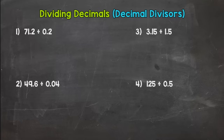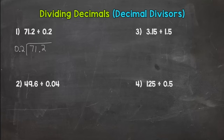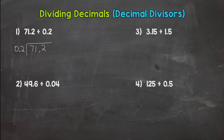Have something to write with and write these out with me — I think that will be beneficial. So here we go with number one: we have 71 and two tenths divided by two tenths. Now, before you start any division problem, ask yourself: is my divisor whole? Remember, if your divisor is whole you bring that decimal straight up. Well, in number one our divisor is not whole, so we do not bring our decimal straight up.